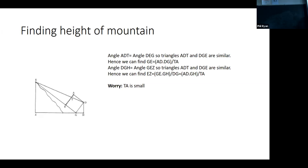So again, you've got a bunch of similar triangles. And so you can do EZ. So from this similar triangle, you can find out GE. So you can figure out this distance from here to here using the similar triangles. And with these two similar triangles, you can find EZ, which is what you want to find. That's just the height of the mountain.